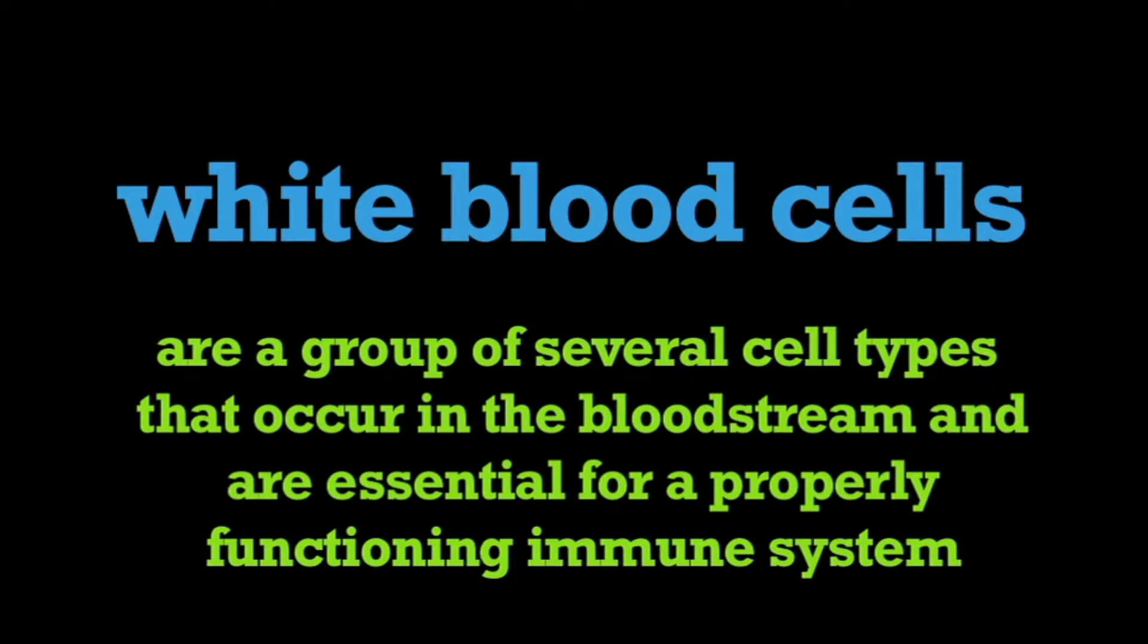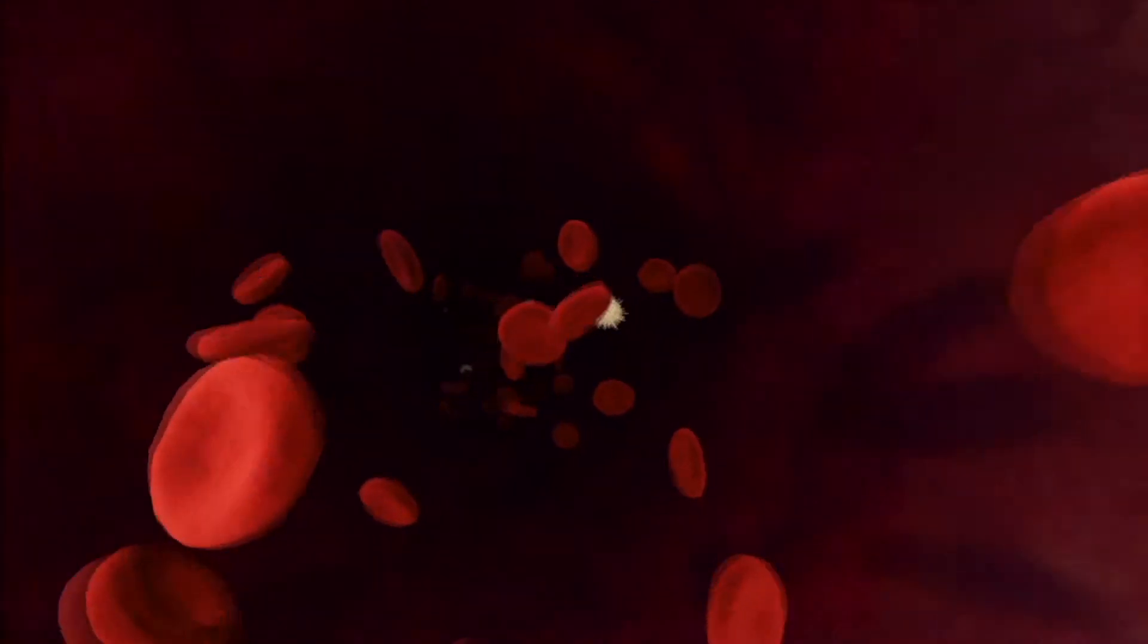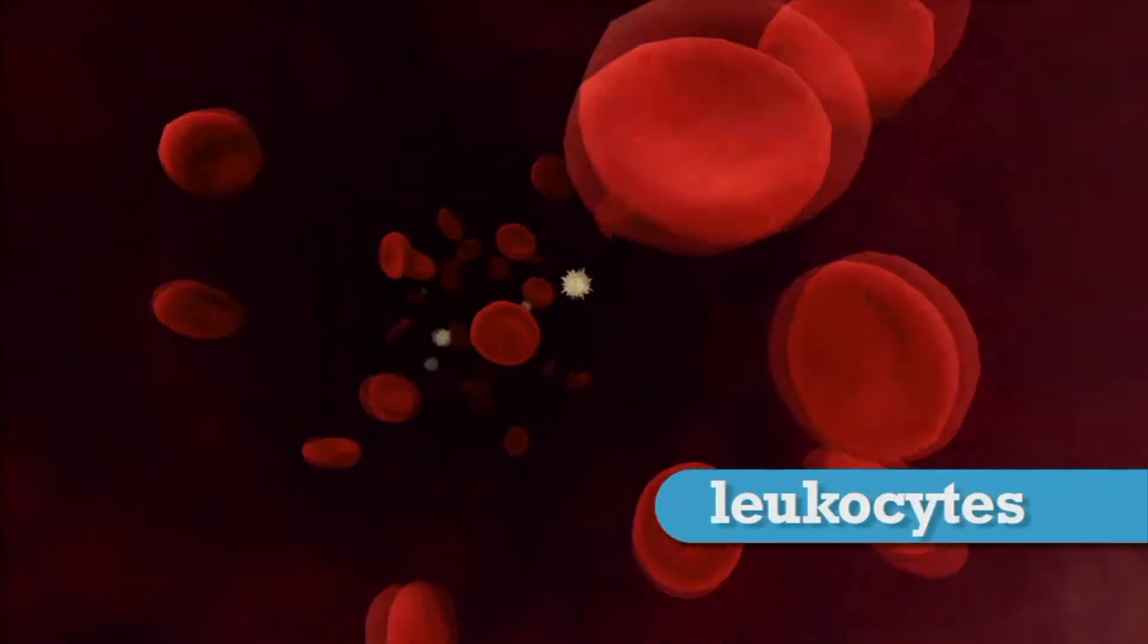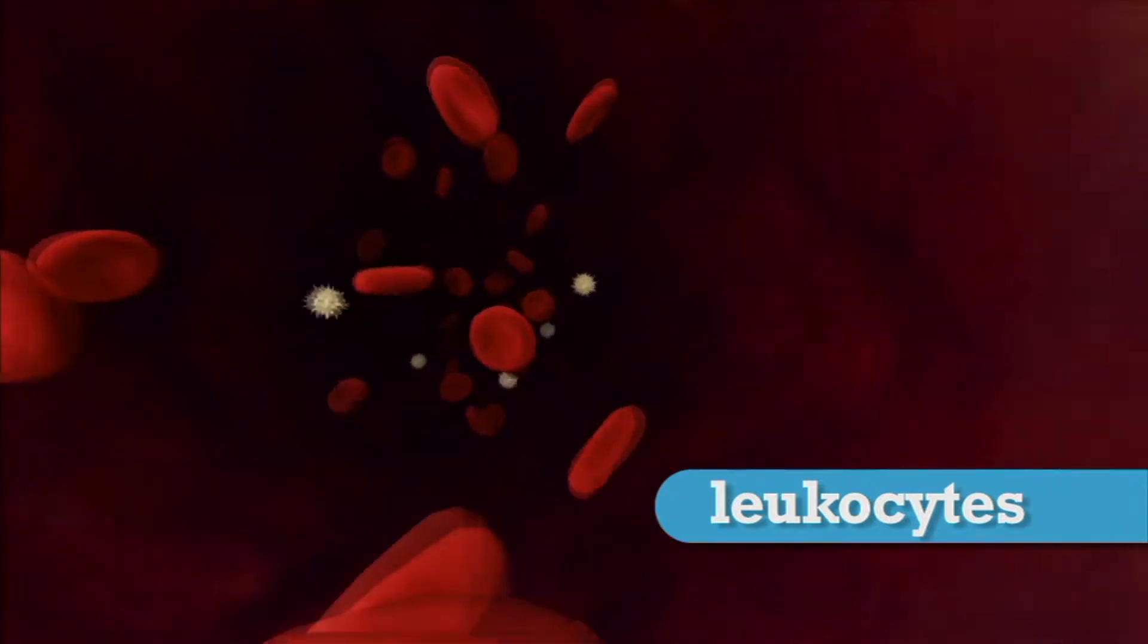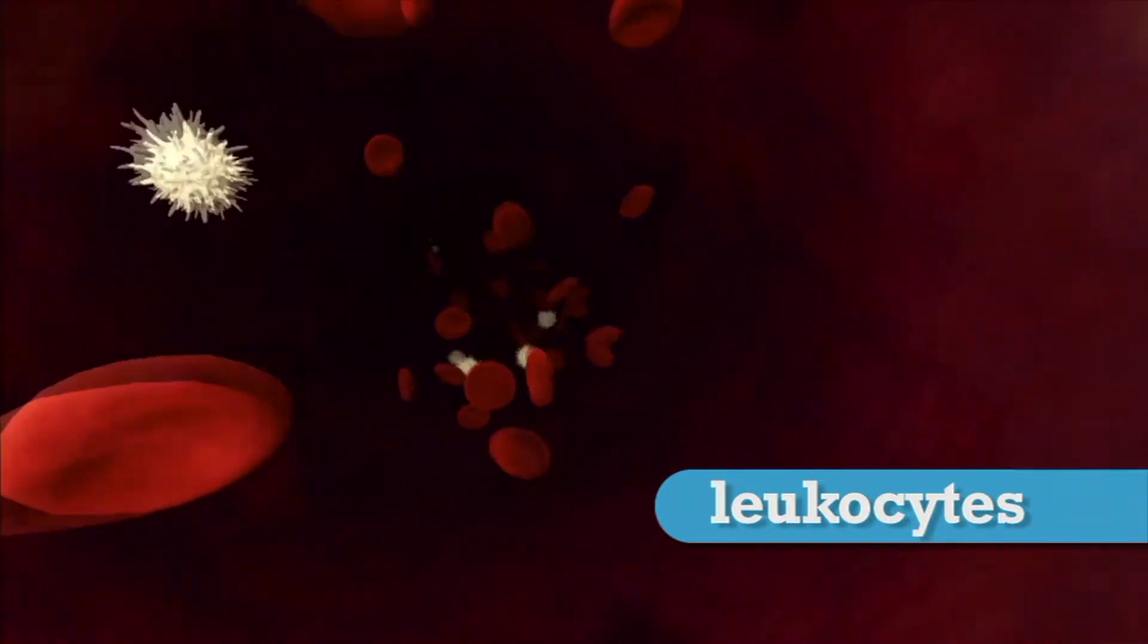White blood cells are a group of several cell types that occur in the bloodstream and are essential for a properly functioning immune system. White blood cells are also known as leukocytes. They are involved in defending the body against infectious diseases and foreign materials.